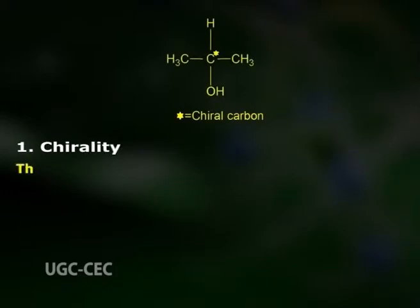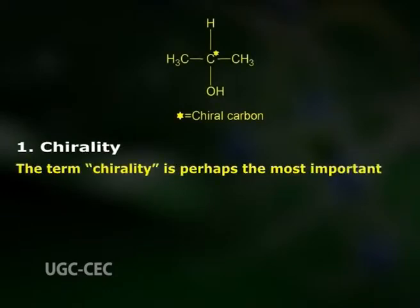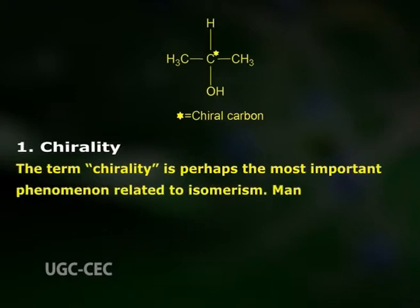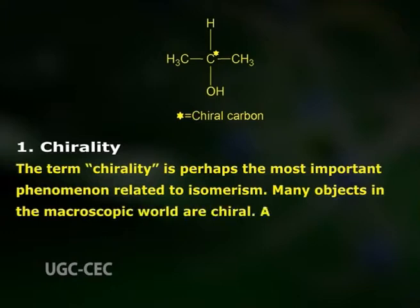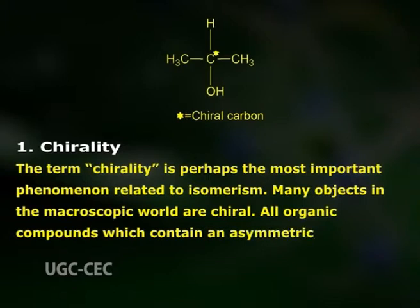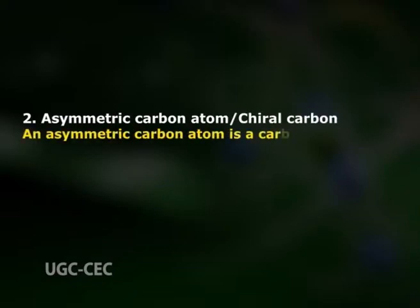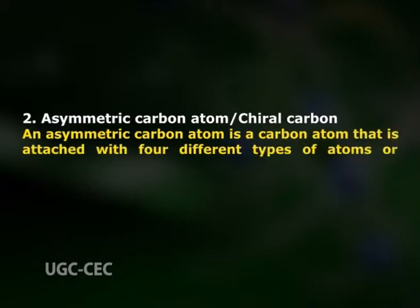Now let's study some terms used in carbohydrate isomerism. Number 1: Chirality. The term chirality is perhaps the most important phenomenon related to isomerism. Many objects in the macroscopic world are chiral. All organic compounds which contain an asymmetric carbon atom are chiral. Number 2: Asymmetric carbon atom, or chiral carbon. An asymmetric carbon atom is a carbon atom that is attached to four different types of atoms or groups of atoms.